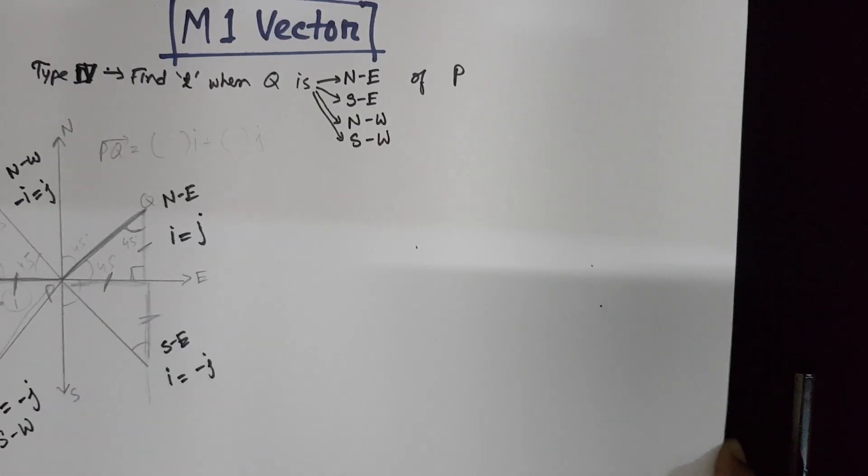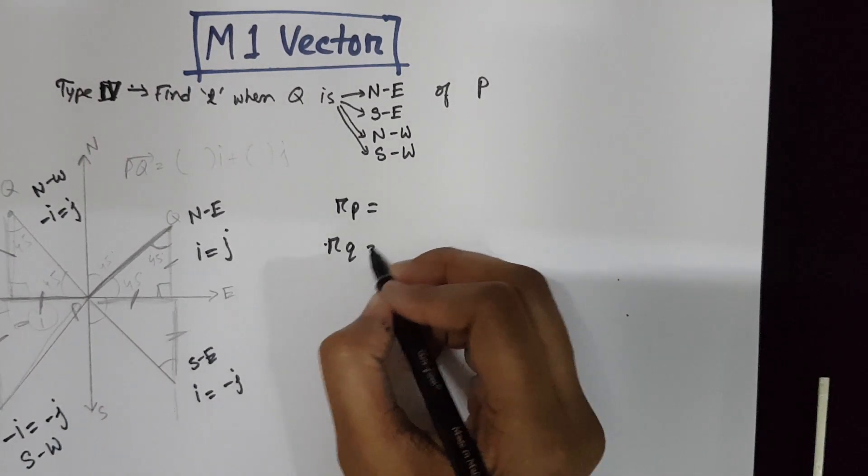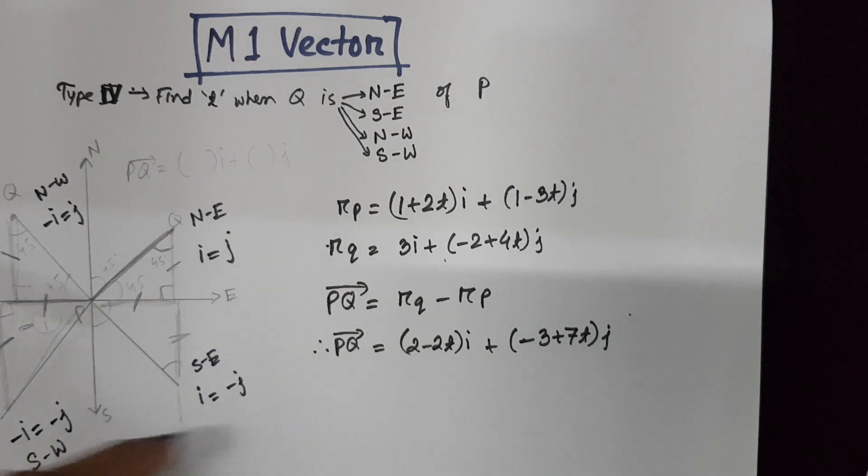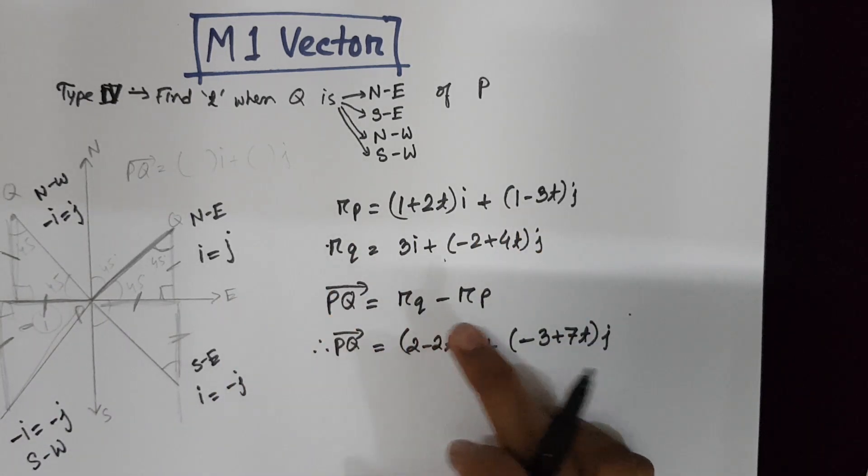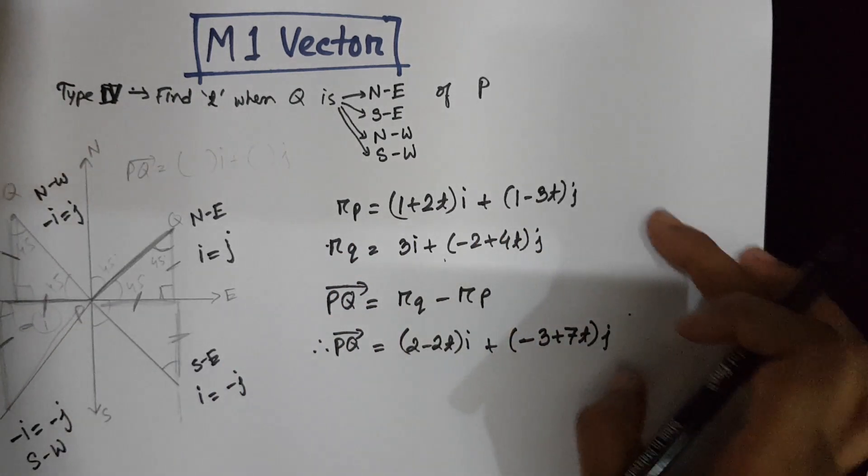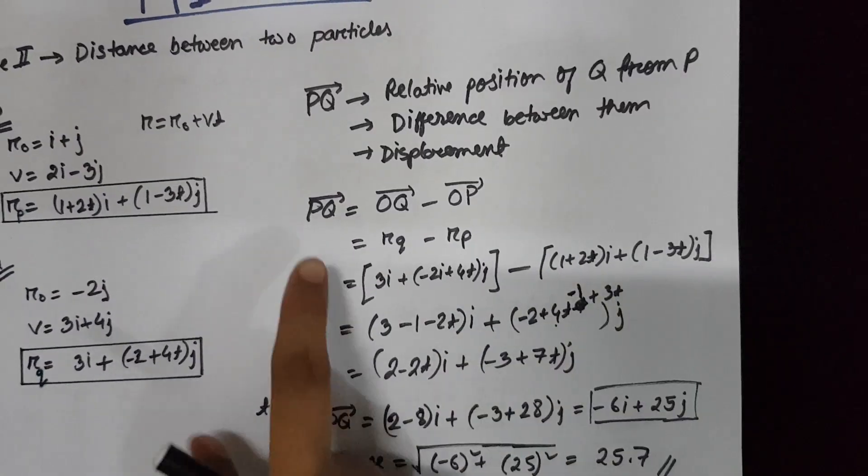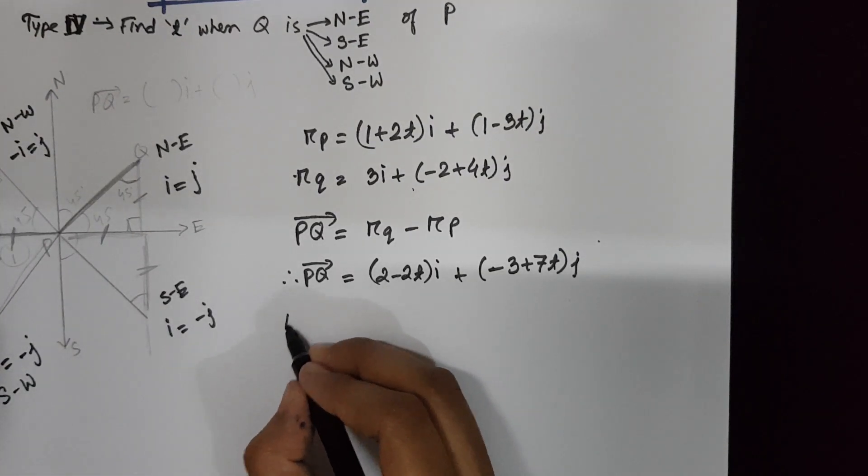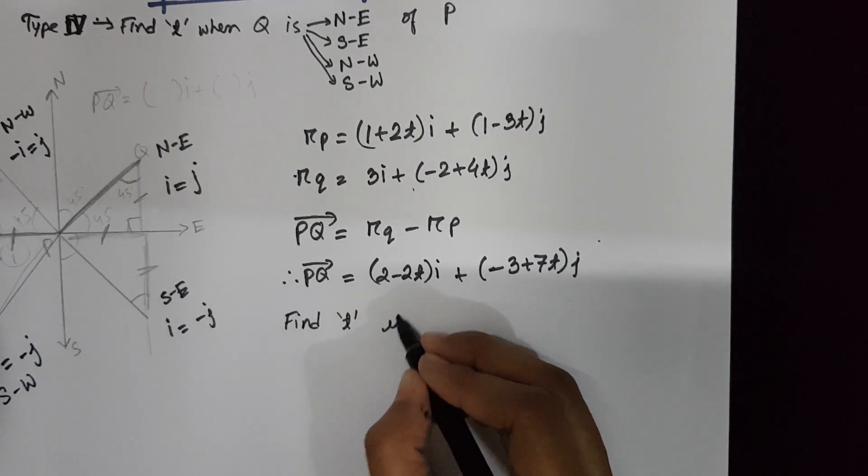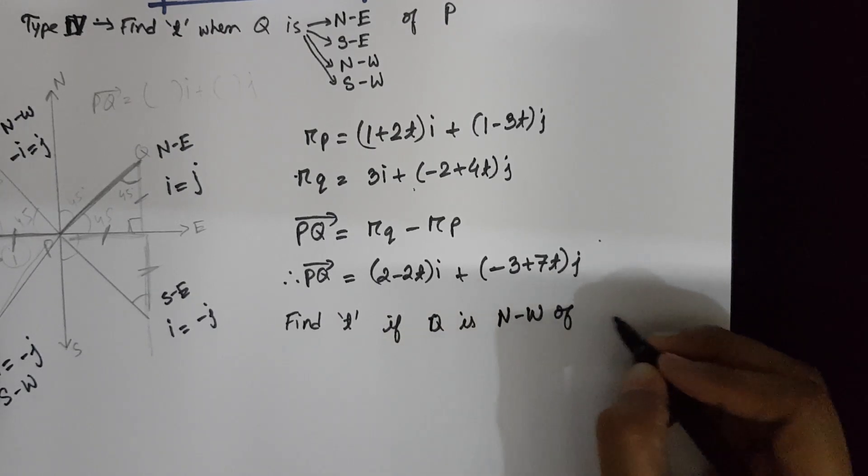Suppose we have two points P and Q. This is the value for the final position vector for particle P and the final position vector of particle Q. If we need to find PQ, we need to deduct RP from RQ. This is done in my previous video for type 2 maths. That's how you get the value of PQ here. Suppose if we need to find the value of T, if particle Q is north-west of particle P.